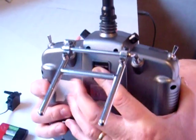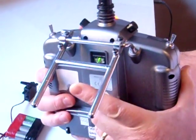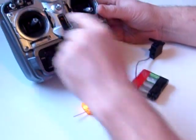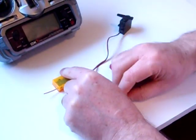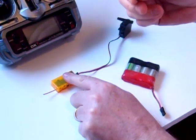It is now solid orange light so we can release the bind button on the back of the transmitter and turn the transmitter off. Pull the battery out of the receiver and then remove the bind plug.